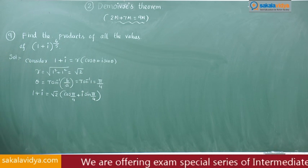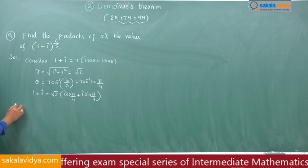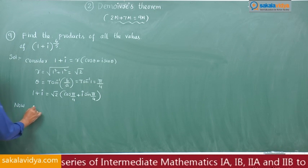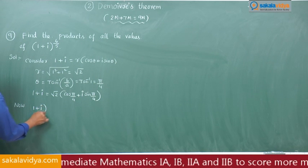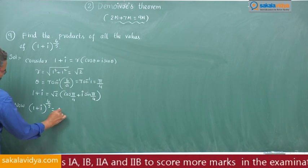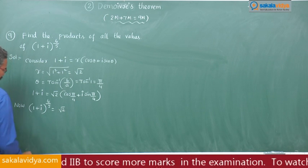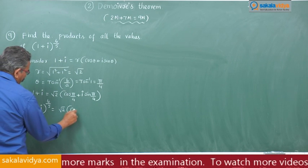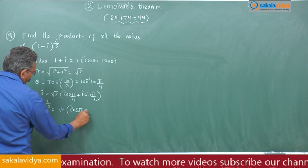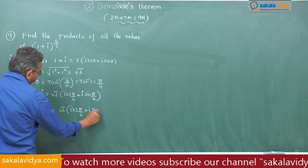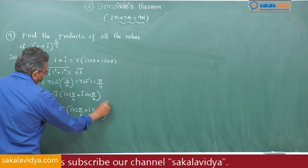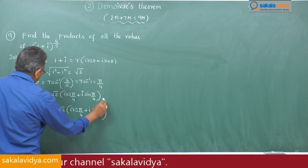Let us come to the problem now. So (1 + i) raised to 4 by 5, that is root 2 times (cos π/4 plus i sin π/4) whole to the power of 4 by 5.